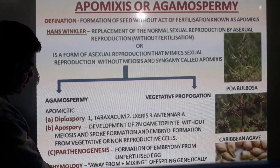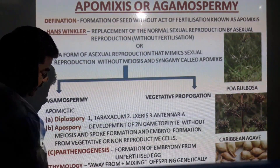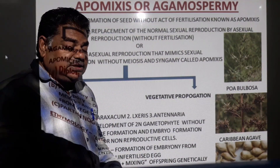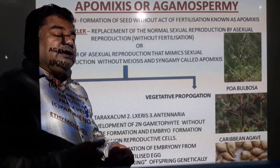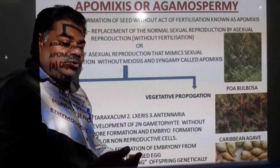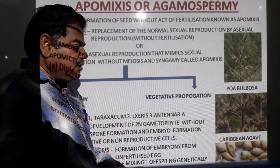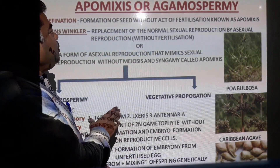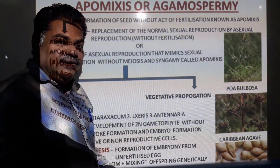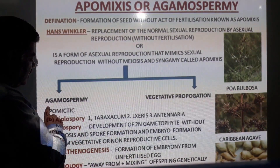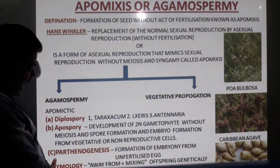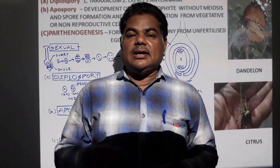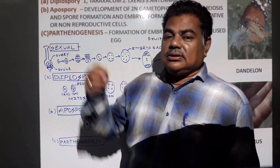Etymologically, Apomyxis means 'away from mixing.' The offspring formed is genetically identical to the parents because it is a type of asexual reproduction — it is reproduced by vegetative cells, so the genetic makeup of the new individual is the same as the parent. Agamospermi types are Diplospory, Apospory, and Parthenogenesis.